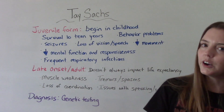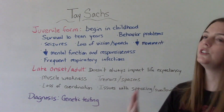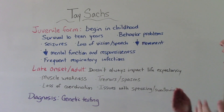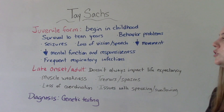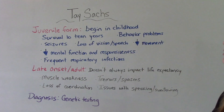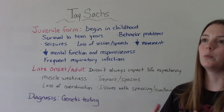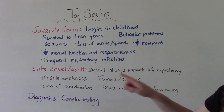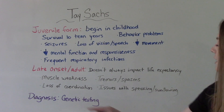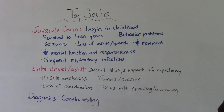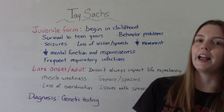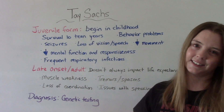The very rare form is late onset or adult Tay-Sachs. Unlike the other two, this one doesn't have to impact life expectancy — an adult who is diagnosed might live a normal lifespan. They will have similar symptoms, though: muscle weakness, tremors or muscle spasms, loss of coordination, issues with their ability to speak, and eventually their ability to swallow. Since this is a genetic disorder, diagnosis is through a blood test and genetic testing.